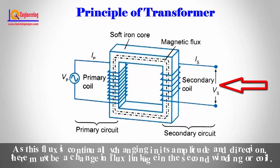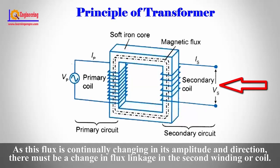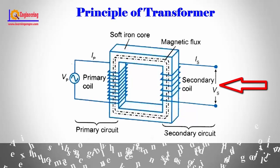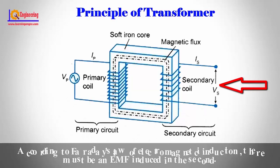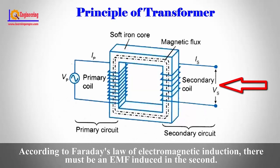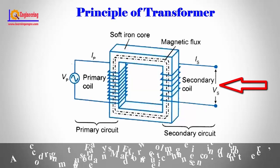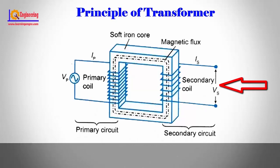As this flux is continually changing in its amplitude and direction, there must be a change in flux linkage in the second winding or coil. According to Faraday's law of electromagnetic induction, there must be an EMF induced in the second winding.